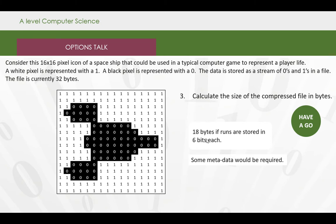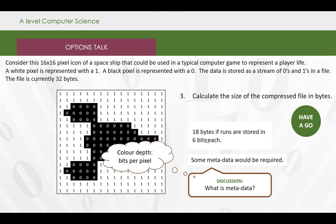However, we would need to store some metadata. So metadata, for those of you who don't know, is data about the file or data about data. We would have to store things like the colour depth, which is the number of bits that we're using to represent the colour.